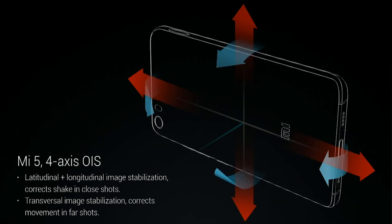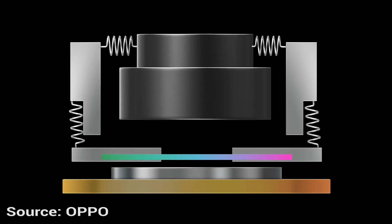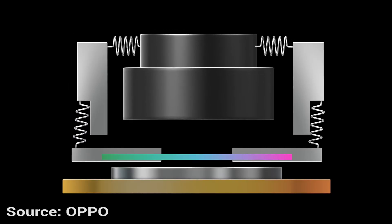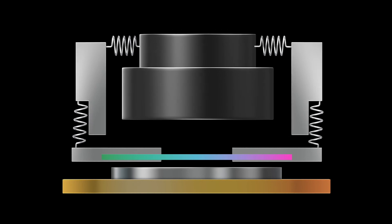There are a couple of gyroscopes that actually measure the velocity and the angle of which way the phone is moving. As you take the picture, a little microcontroller moves a floating lens with some motors attached to it in the other direction to compensate for that movement. Obviously it can't compensate for huge movement because you've only got a little lens, however it can compensate for camera shake.